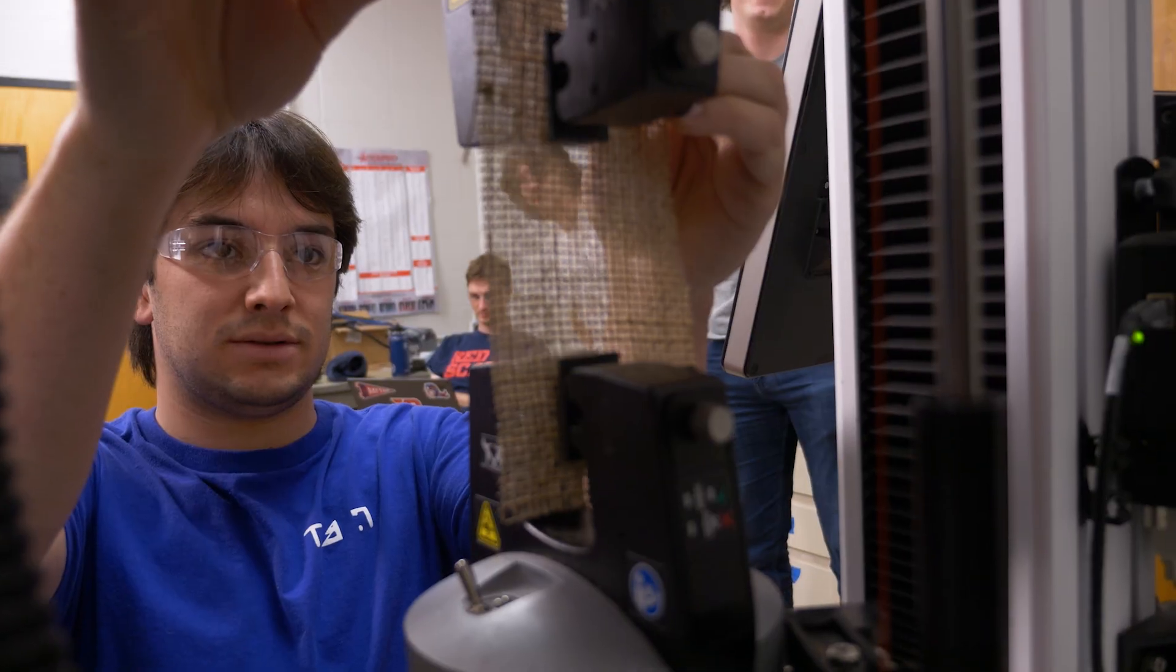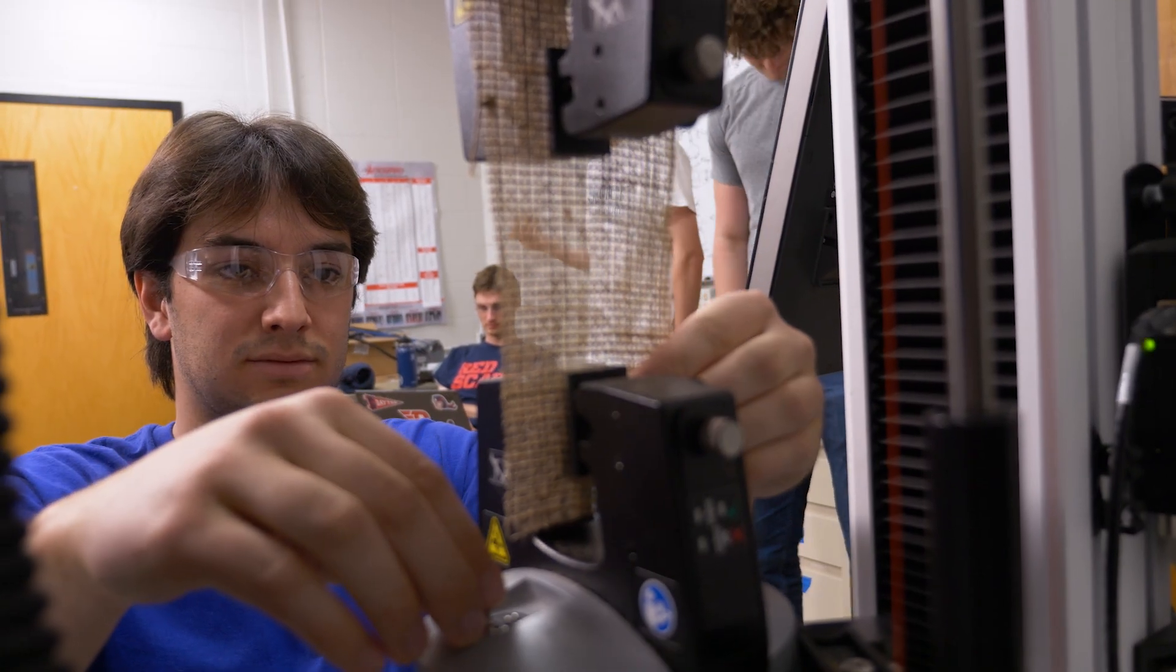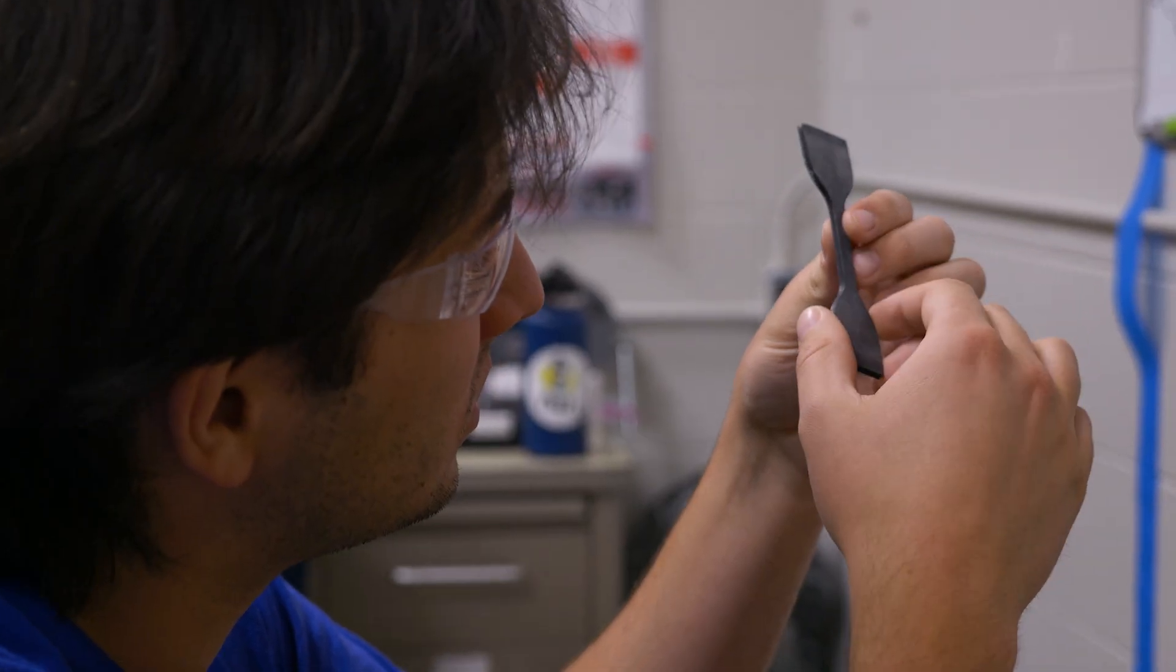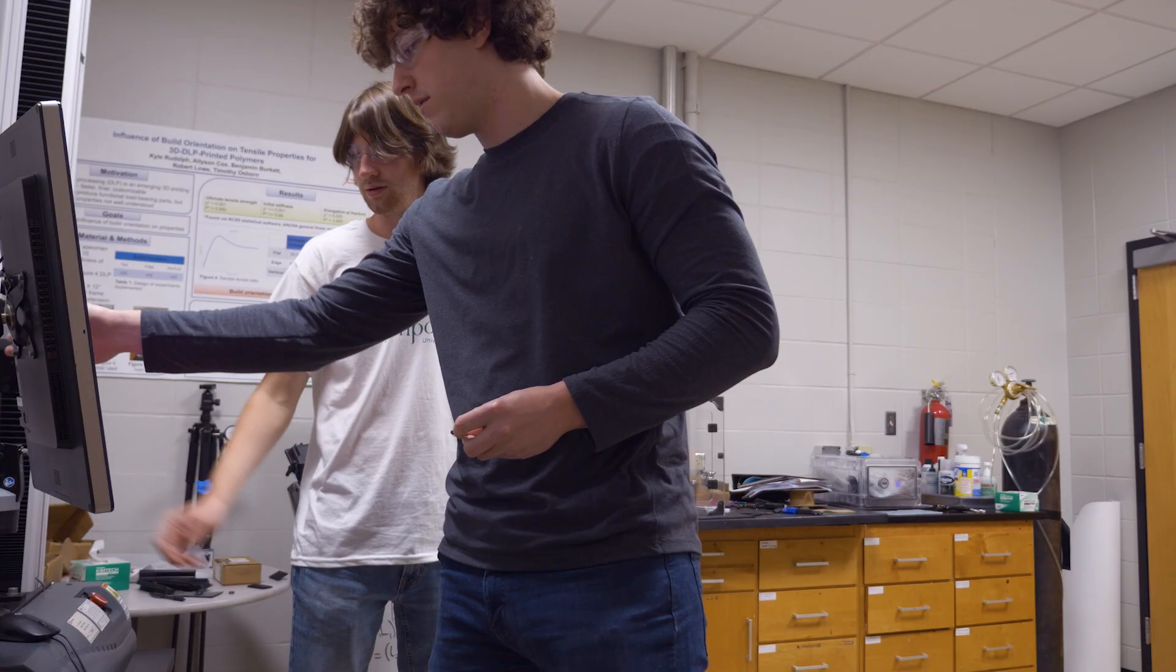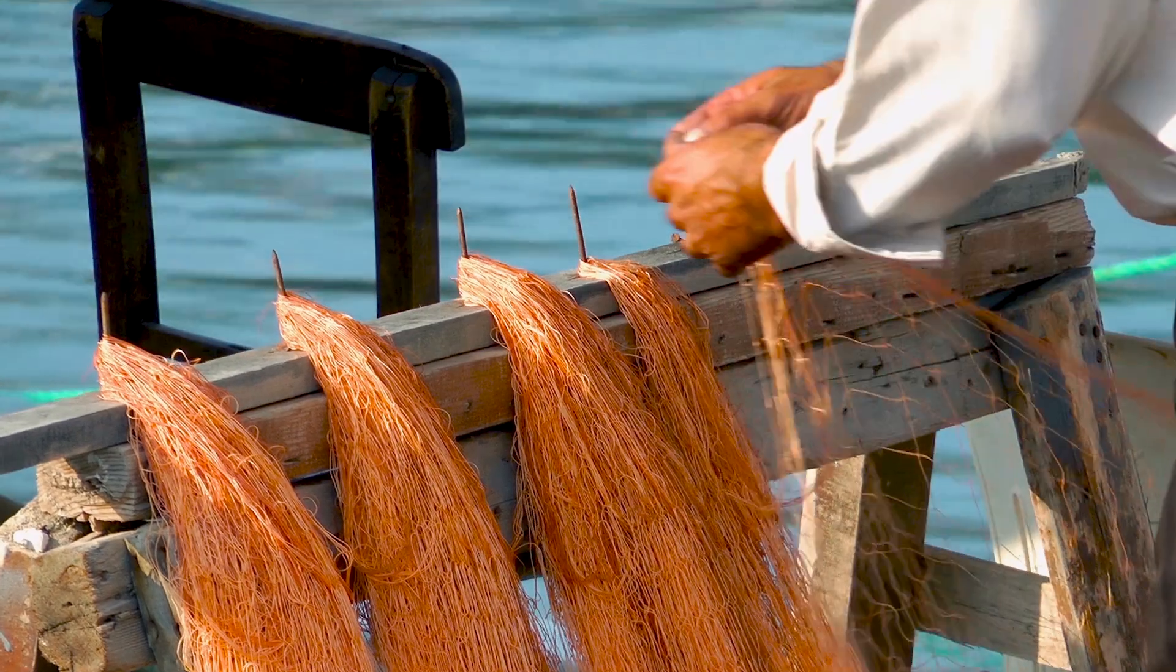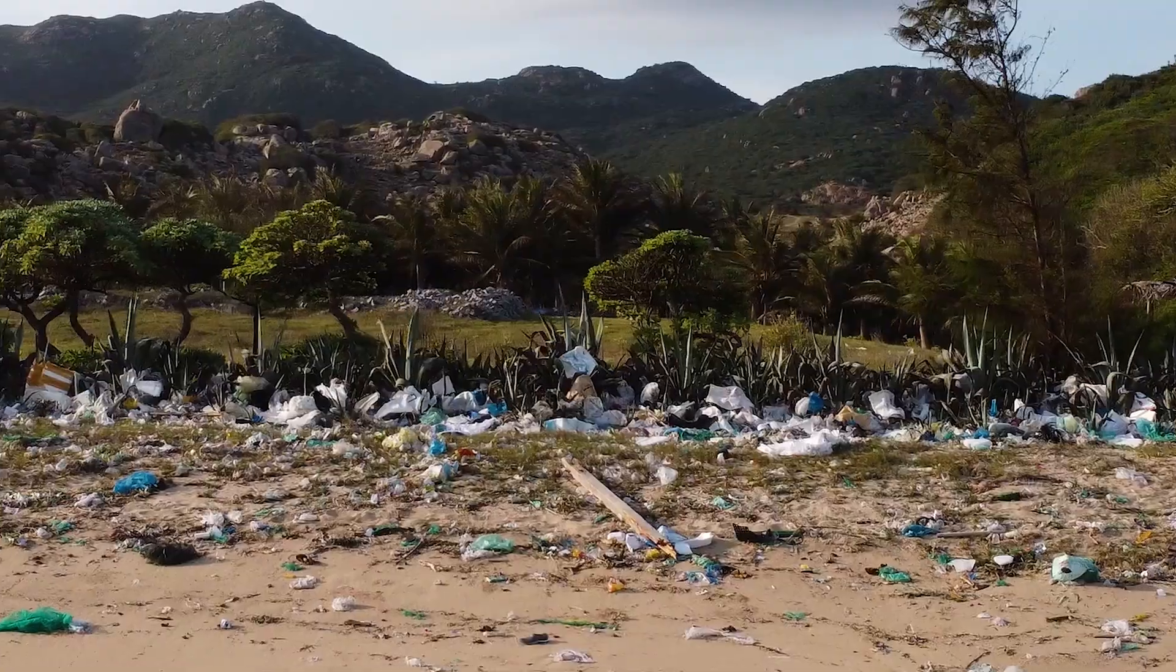We're going to try to do some single fiber testing of these natural materials and then subject them to environmental factors. If we can make a product that can be used and replace some of these plastics efficiently, then that's one less piece of plastic in the ocean.